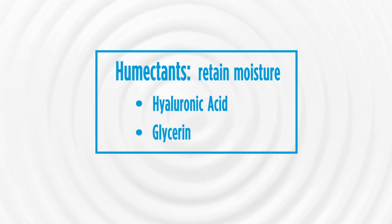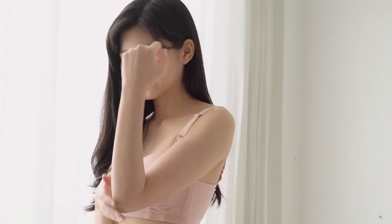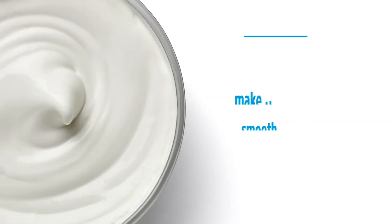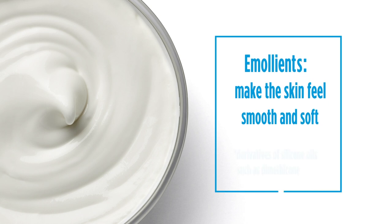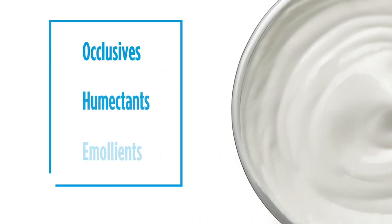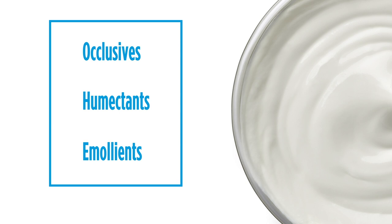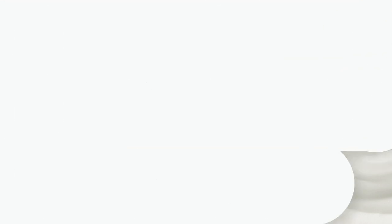Finally, you need something to make the skin feel smooth and soft — that's something consumers want. Smooth and soft is something delivered by an emollient. Many of those are derivatives of silicone oils, such as dimethicone. So those three key ingredients can provide all the healing qualities and all the moisturizing qualities necessary.